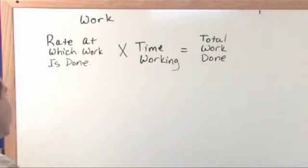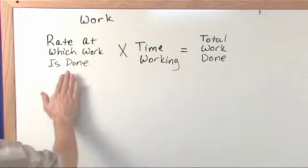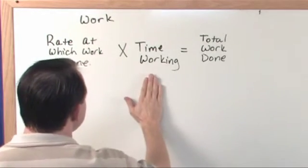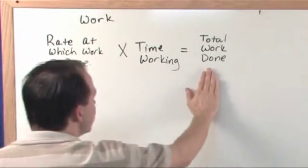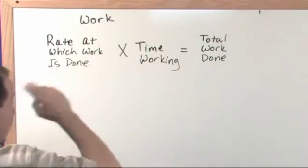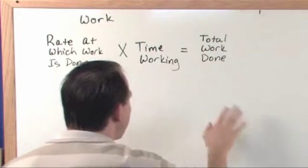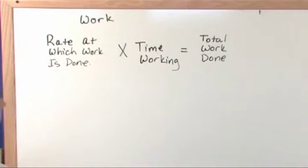This is just an equation in words here, this is just an idea we need to talk about a little bit here. If you know how fast you're doing the work, the pace at which the work is being done, and you multiply that by how long you actually do the work, then the answer you will get when you multiply these two numbers together will be the amount of work actually done over that period of time.